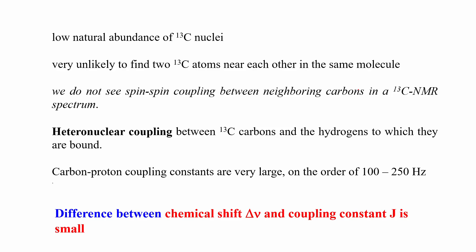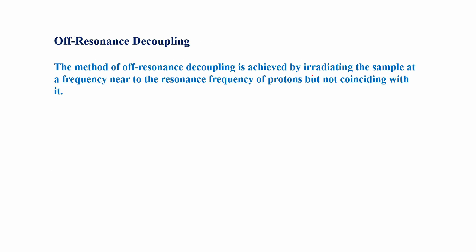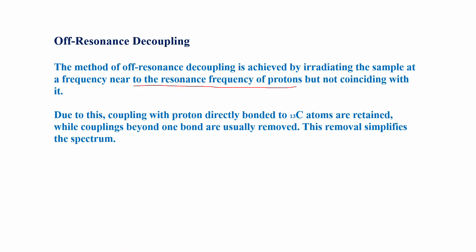Here in this video, I will discuss one of the important decoupling techniques called off-resonance decoupling in carbon-13 NMR spectra. In off-resonance decoupling, it is achieved by irradiating the sample at a frequency near to — but not the same as — the resonance frequency of protons. Due to this, coupling between protons directly bonded to carbon-13 is retained, while coupling beyond one bond are usually removed, which simplifies the carbon-13 spectrum.